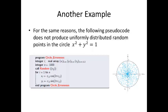Another example, for the same reasons the following pseudocode does not produce uniformly distributed random points in the circle X squared plus Y squared is equal to 1. In this pseudocode, 2 pi times R_i2 is uniformly distributed in 0, 2 pi, and R_i1 is uniformly distributed in 0, 1.